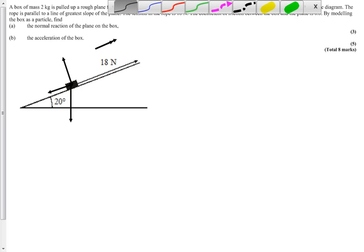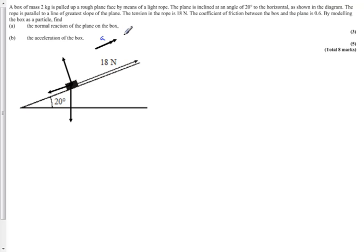Let's label these up. It's accelerating up the plane, there's a reaction force, friction opposing motion, and then 2 kilograms mass means there is 2g, with g = 9.8 because of gravity acting vertically downwards.